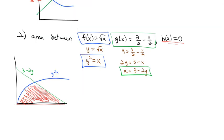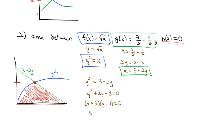We need to find where they intersect. Setting y squared equals 3 minus 2y, adding 2y and subtracting 3, then factoring gives (y plus 3)(y minus 1). So y is negative 3 or positive 1. The y squared function would give that negative 3 value, but for our purposes we're interested in just the 1. The y's are going from 0 up to 1.